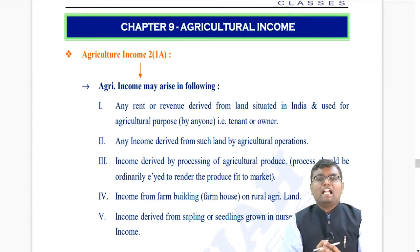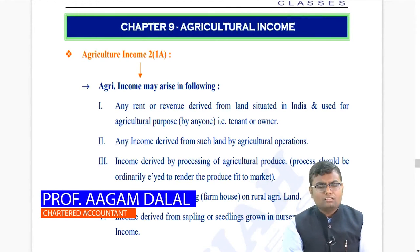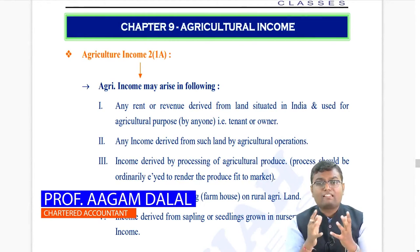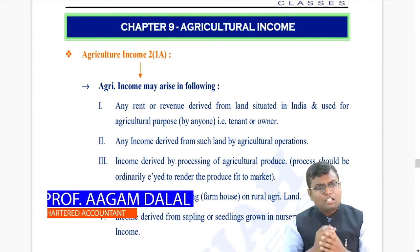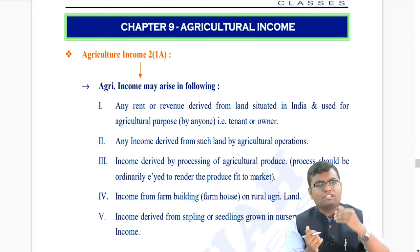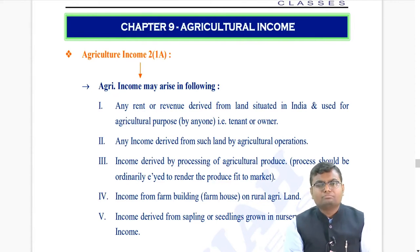Let us start with chapter number 9, that is agricultural income — a very small topic. Chapter number 3 of your module, which is exemptions, I have divided into two videos: one will be agricultural income, another will be other exemptions. So let us discuss agricultural income.